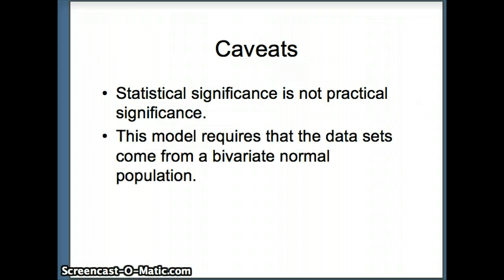Another issue that we have here is this model requires that the data sets come from a bivariate normal population, which may not always be the case, and it's relatively difficult for us to test. So if you're going to use correlations, that's fine to give you an idea about the strength of the relationship between two sets of data, between two variables. However,